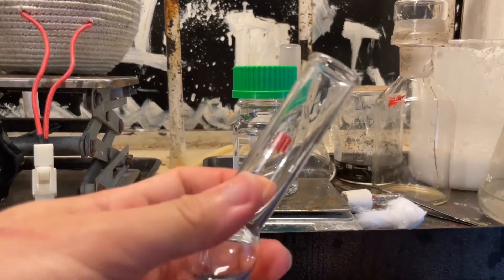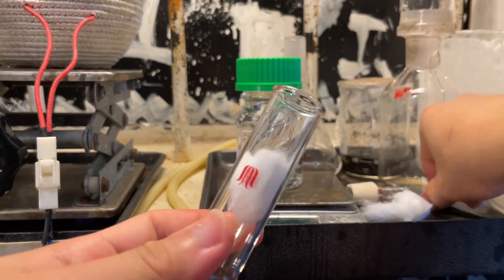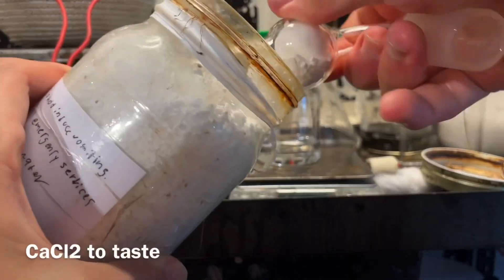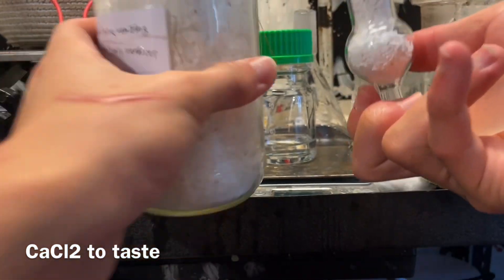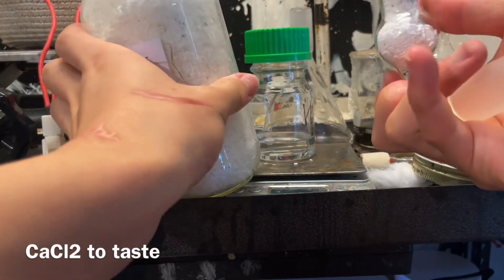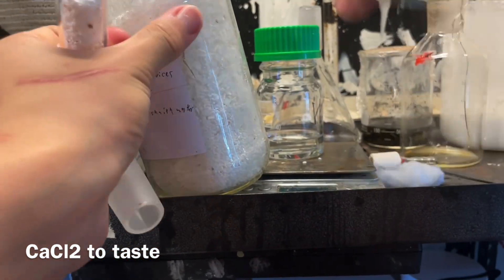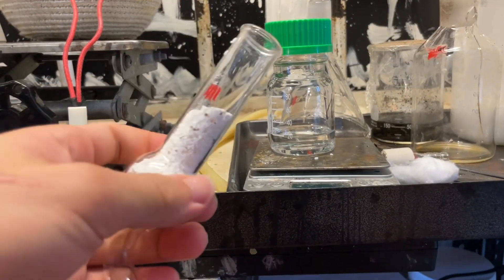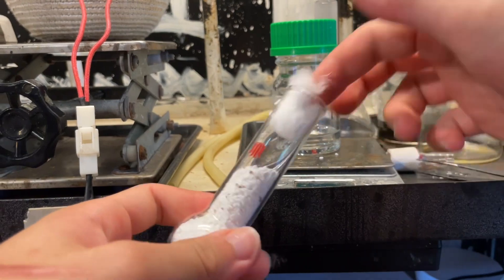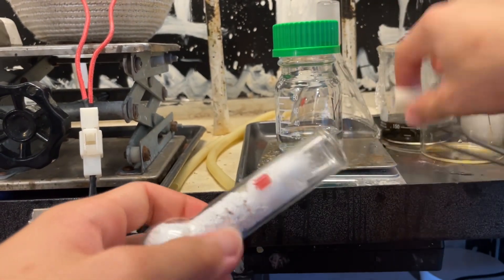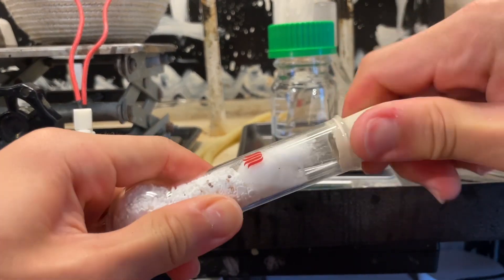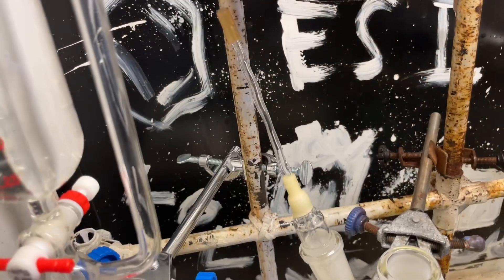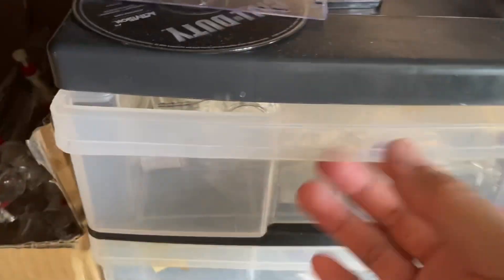Now I'm going to set up a drying tube to dry the chlorine gas. You could use a sulfuric acid bubbler, but I found it's unnecessary. Simply a cotton plug, some calcium chloride, and another cotton plug on top to seal it off. I hooked up the chlorine generator to the inlet tube for the flask.